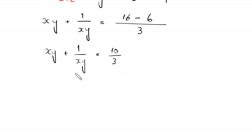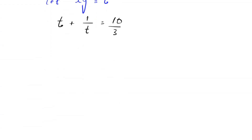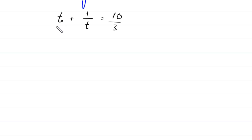We let xy equal t, so the equation becomes t plus 1/t equals 10/3. Taking the LCM of 1 and t, which is t, we get (t² + 1)/t equals 10/3.